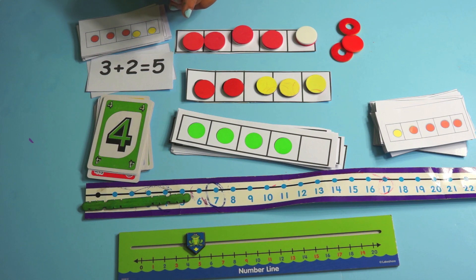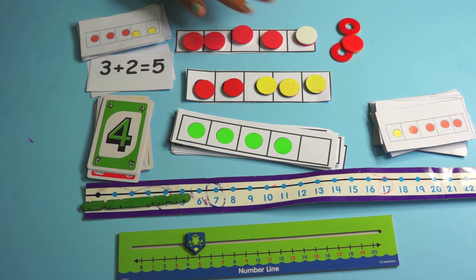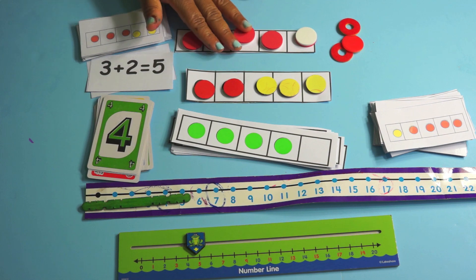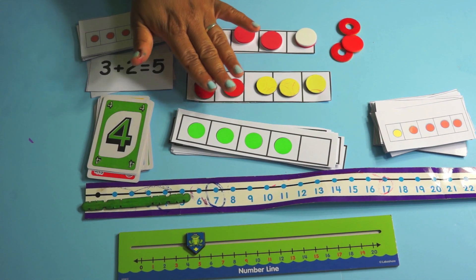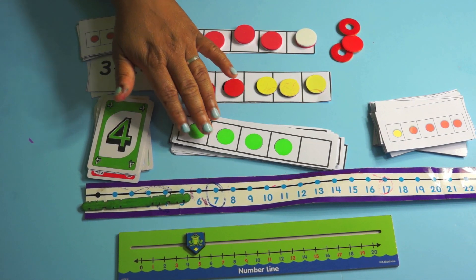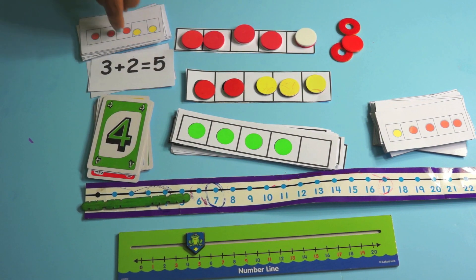Okay. So there's a bunch of different games that you can do with your children. You can play the five frame with the counters. You can do five frames with the magnets. You can do subitizing cards. You can play the how many more cards and you can do the match me.